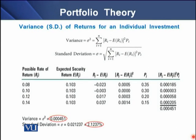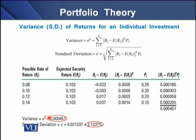How can variance or standard deviation of return be measured for an individual investment? We can see a formula of variance on the screen, and then we have a model to determine the standard deviation. We have four possibilities or probabilities of returns and four expected returns of a security. We have a deviation which is actual returns minus the average of these four returns, then we have the square of these individual deviations and the probability of each return. When we multiply this probability value with the squared deviations and sum them up, we have a variance of 0.000451. To standardize this, we take the standard deviation by removing the square, giving a standard deviation of 2.1237, which is the riskiness of an individual asset.